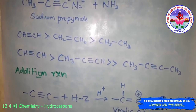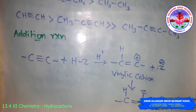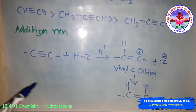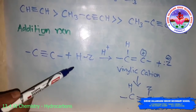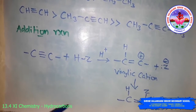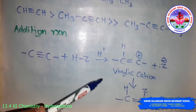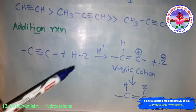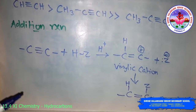The addition reactions: alkynes contain a triple bond and can add up to two molecules of dihydrogen, halogen, or hydrogen halides. The addition product depends on the stability of the vinylic cation formed. Addition in unsymmetrical alkynes takes place according to Markovnikov's rule. The majority of reactions of alkynes are examples of electrophilic addition reactions.